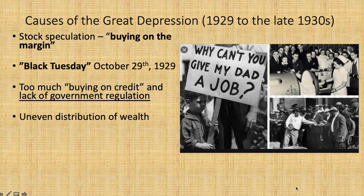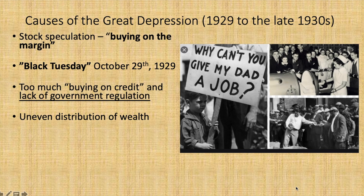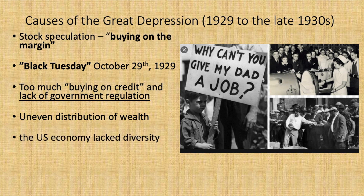Uneven distribution of wealth. Americans generally prospered during the 1920s, but wealthy Americans prospered a lot more than those of lower income. By 1929, 0.02% of the American population possessed more than 40% of the nation's savings. When wealthy Americans began to cut back on their spending as the economy contracted, it slowed down the economy for all. The U.S. economy also lacked diversity and depended too heavily on construction and the automobile industries — think of the saying 'putting all your eggs in one basket.' A diversified economy can cover trouble in one sector, but this one could not.